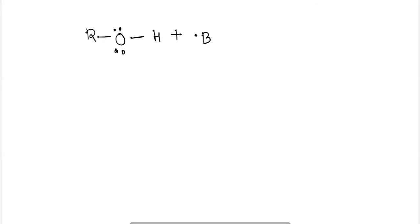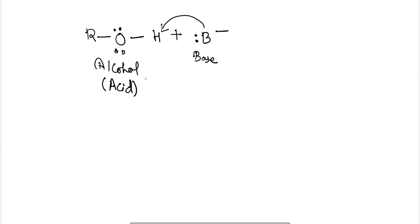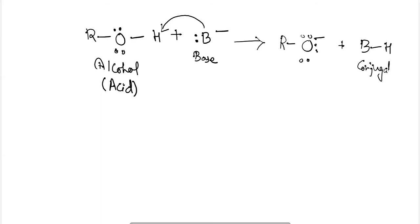Looking at this reaction, the metals which are generally bases attack the hydrogen of the alcohol. The alcohol releases the H⁺ ion — the metals attack the hydrogen to form the alkoxide ion with a negative charge, since three lone pairs of electrons are present. A conjugate acid BH is formed.